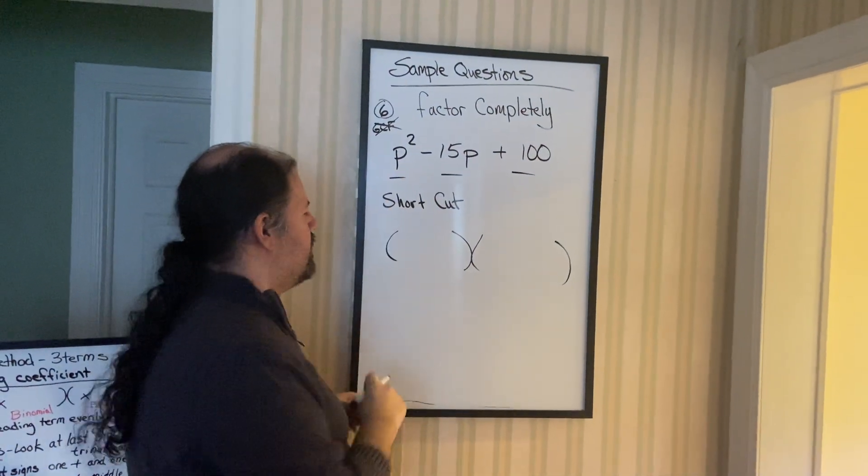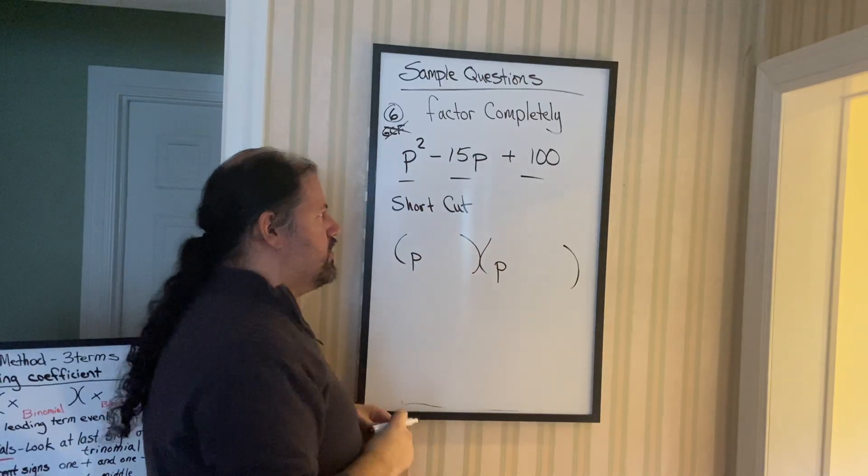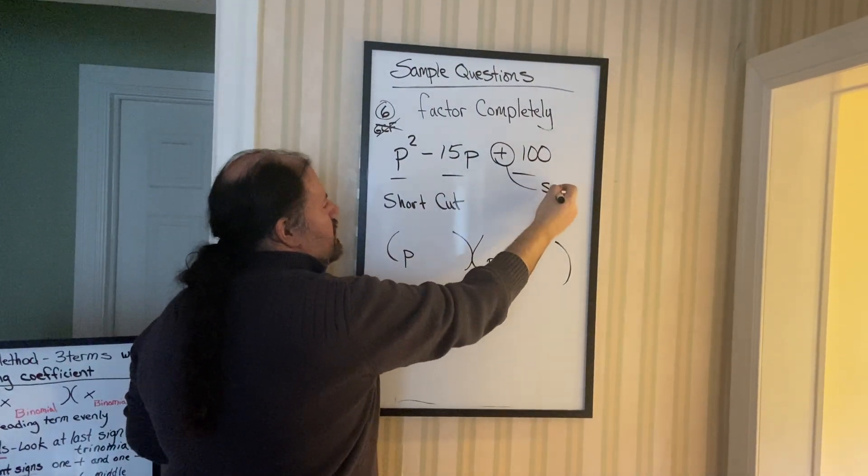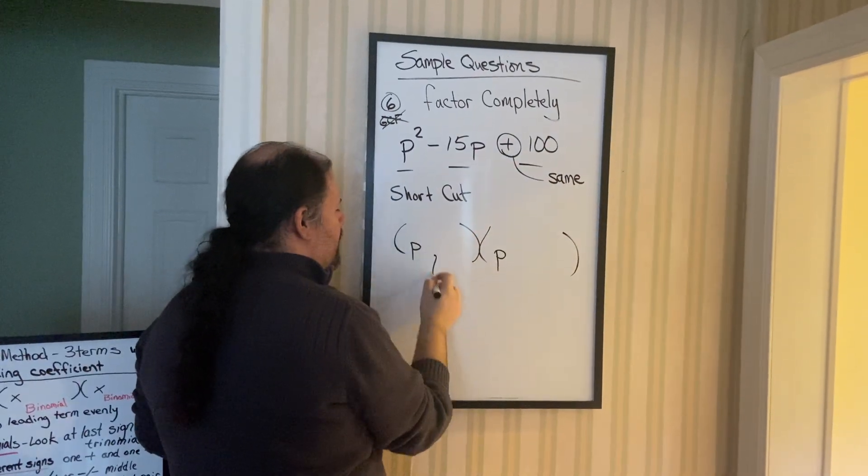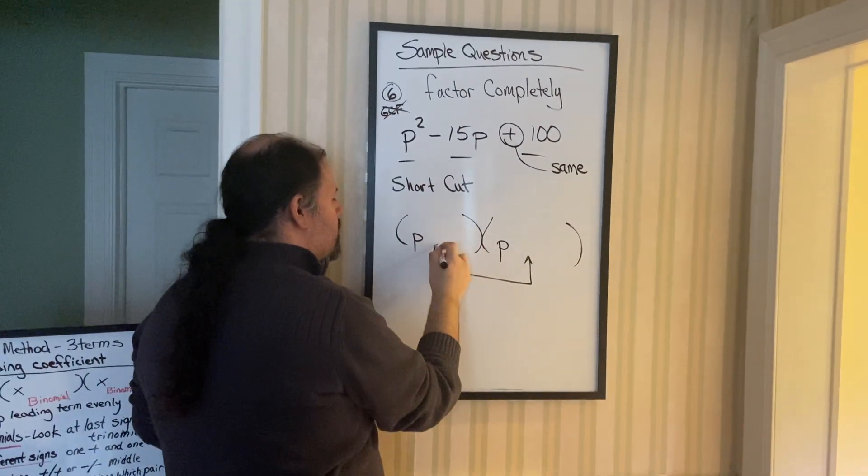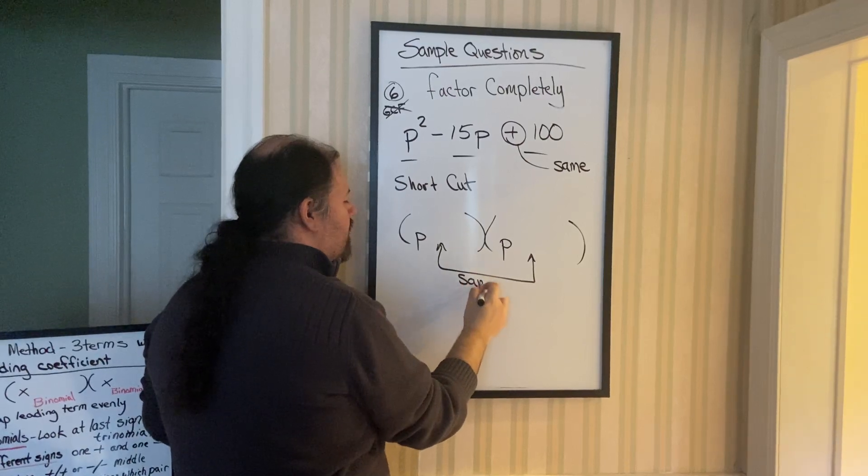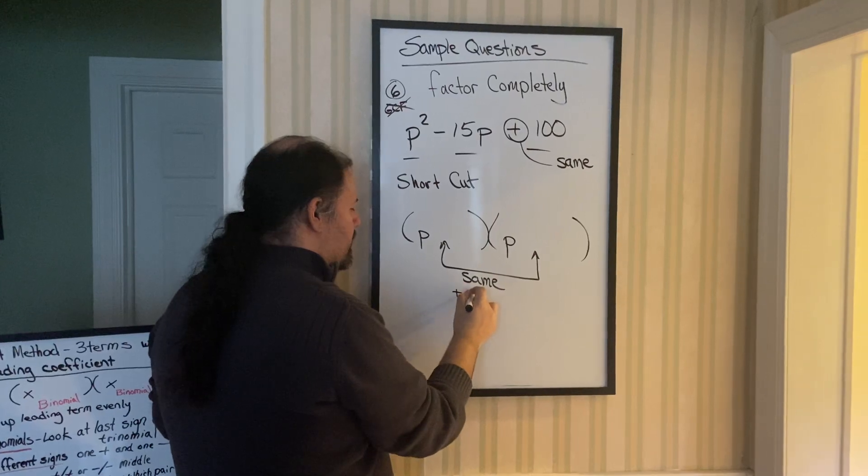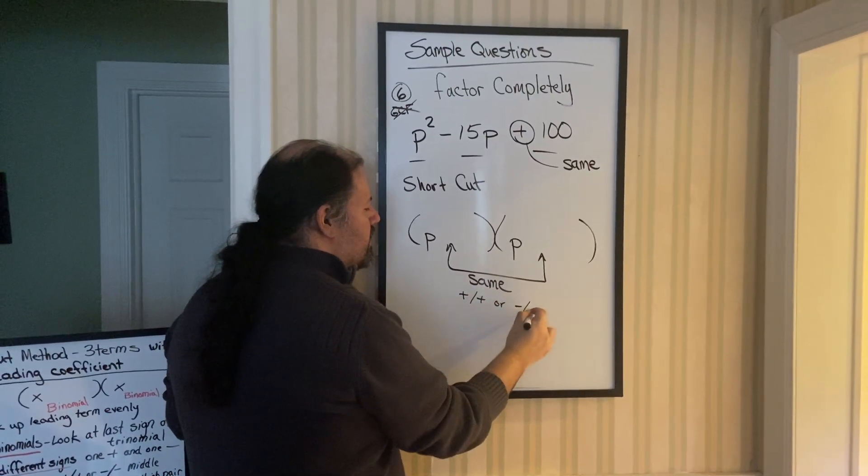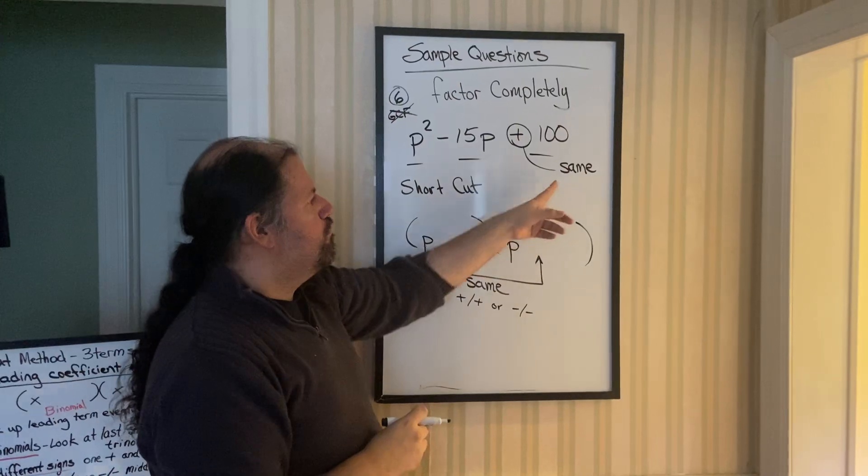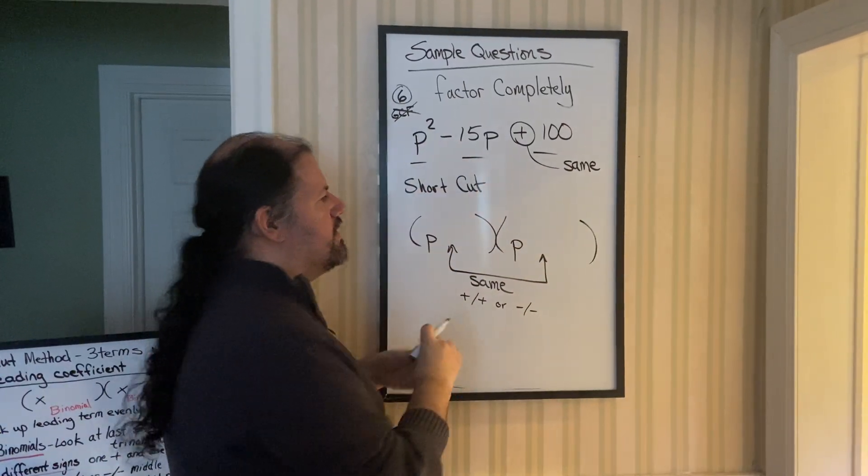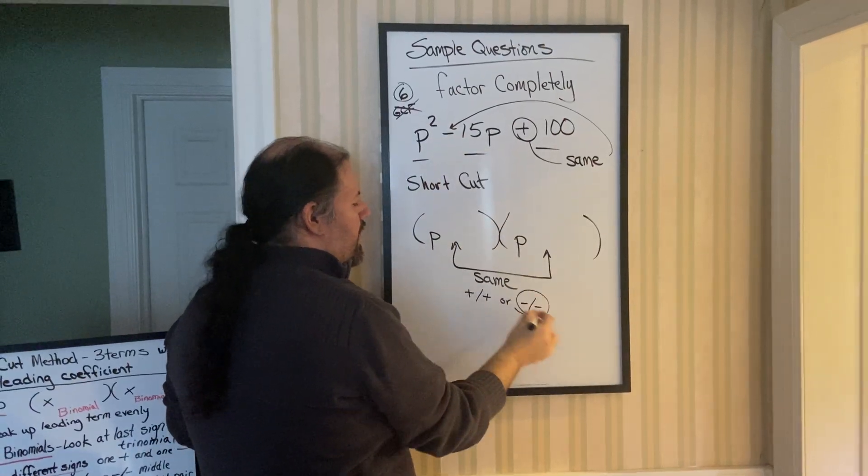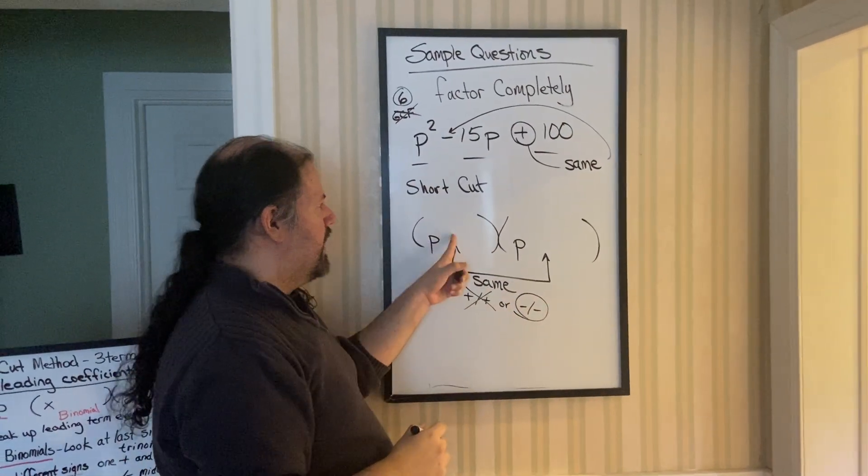Break up the leading term P squared as P and P. Step two, sign issues. Remember, this is a plus sign. So that tells me, same signs. So these two binomials have to have the same sign. Now that either means two pluses or two minuses. It could be two pluses, or it could be two minuses. You have to look at the middle to determine what type. Anytime it's same, since it's a minus, minus, minus.